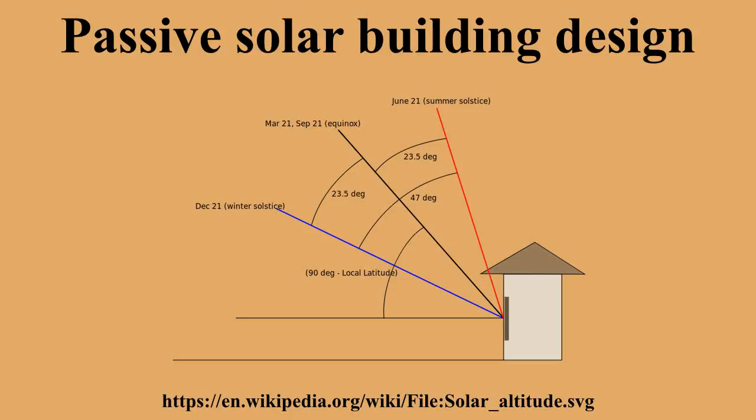In passive solar building design, windows, walls, and floors are made to collect, store, and distribute solar energy in the form of heat in the winter and reject solar heat in the summer.